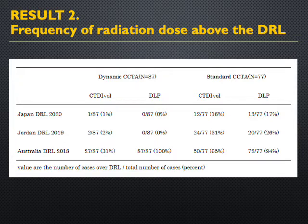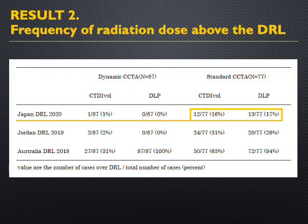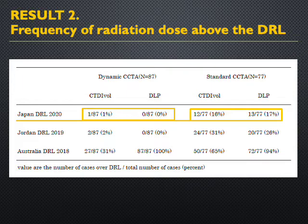This is the frequency of radiation dose above the DRLs. For standard scans, CTDIvol and DLP exceeded the 2020 DRL for Japan in 60% and 70% of cases respectively. In contrast, the rate for the dynamic scan was only 1% for CTDIvol and 0% for DLP.